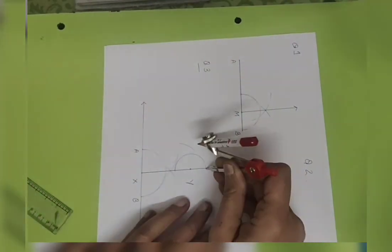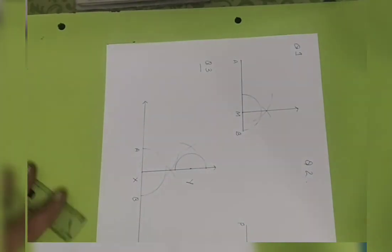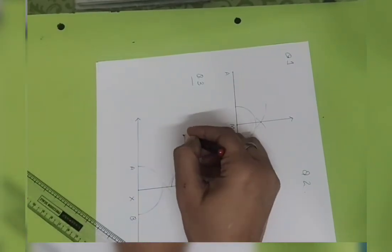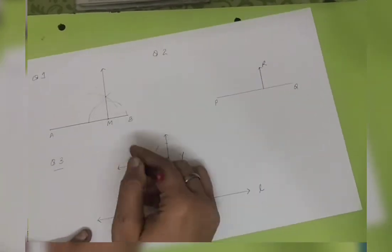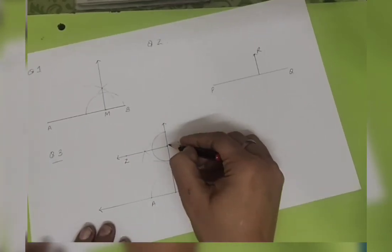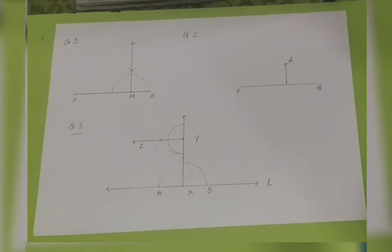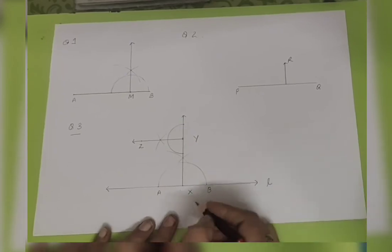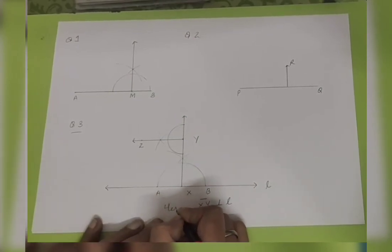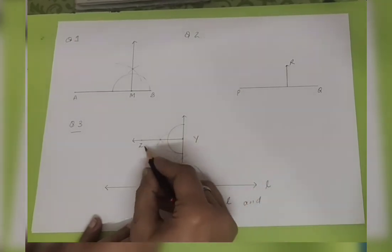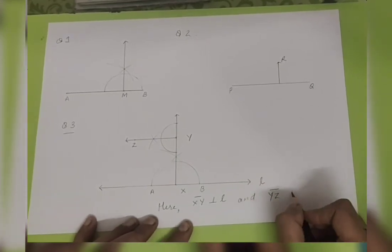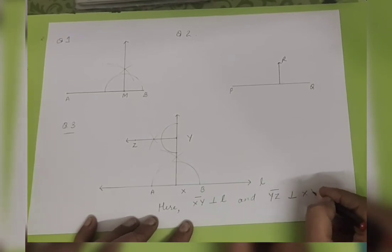Now reopen the compass a little more than half the gap between the two intersection points on XY. Put an arc from one intersection point, then another arc from the other intersection point. They meet at a new point — join this to Y and extend the line. Name this new point Z. So we get line segment YZ, which is perpendicular to XY. Overall, we have drawn two perpendiculars: XY is perpendicular to L, and YZ is perpendicular to XY.